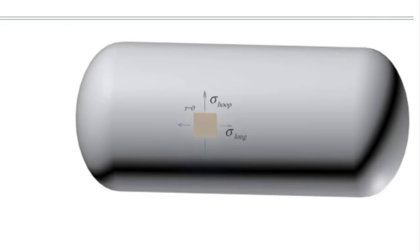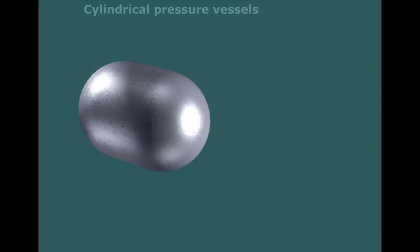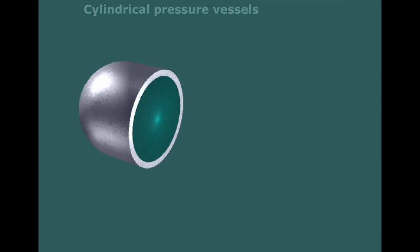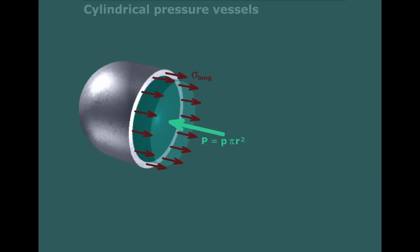Let's see how we can determine those stresses. We follow the same concept as we did before for spherical pressure vessels. Let's start with the longitudinal stress. To determine the longitudinal stress, we plot that as shown here in this figure, and then determine the forces caused by the internal pressure of the liquid. The resultant force would be the pressure multiplied by the area, which is pi times radius squared, and pressure is P. So the total force would be pi r squared multiplied by P.